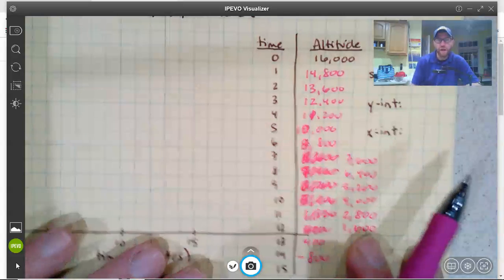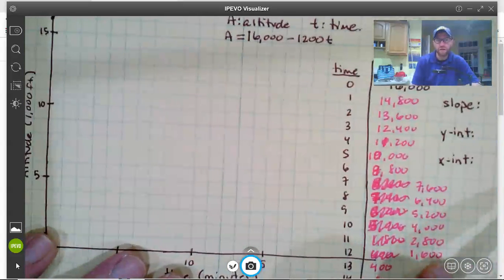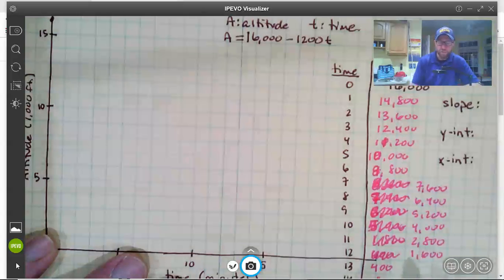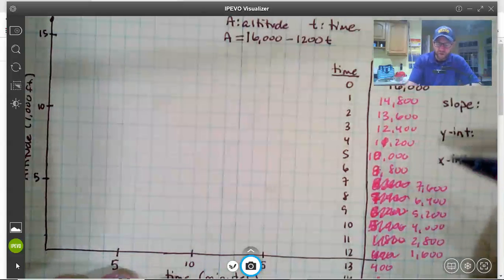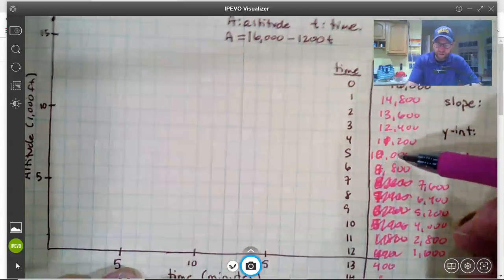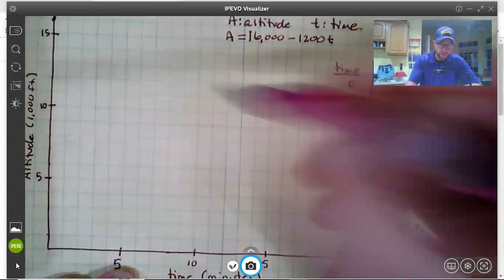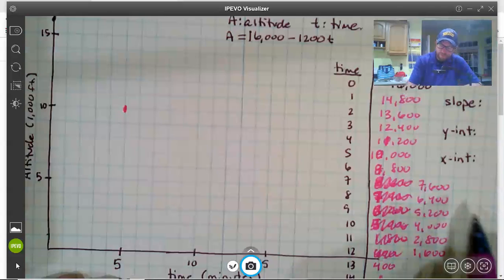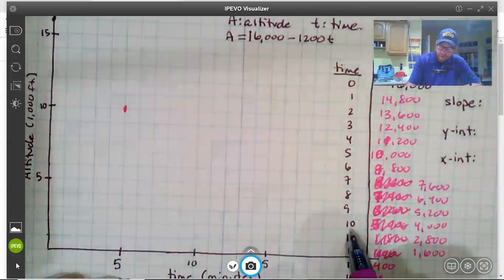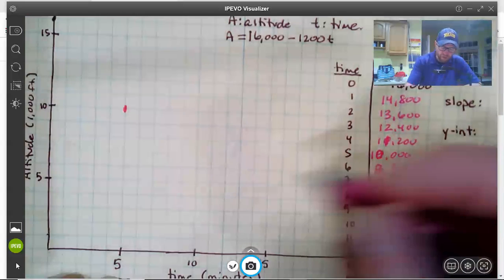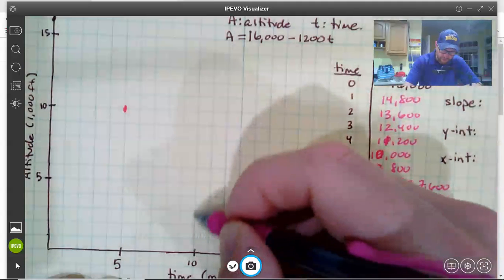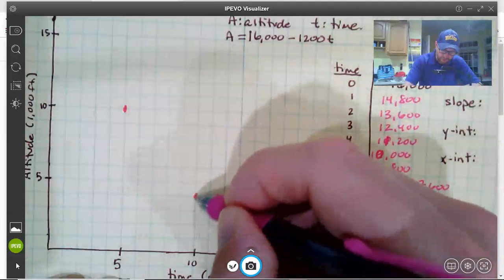So I'm going to go ahead and plot these points on my grid just to kind of get an idea where we're at here. I'm not going to plot all the points. I'm just going to plot the ones that are fairly easy. So for example, I have at five minutes, we're at 10,000 feet. So five, that's 10,000. And then at 10, we are at 4,000, right? 10 minutes, we're at 4,000.